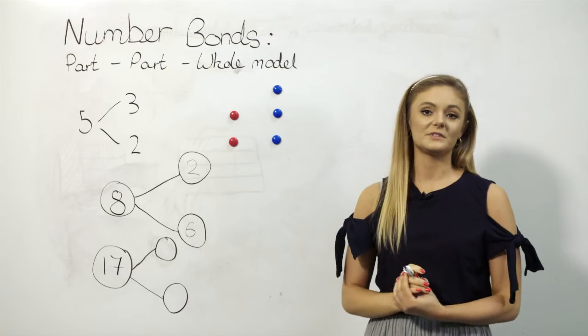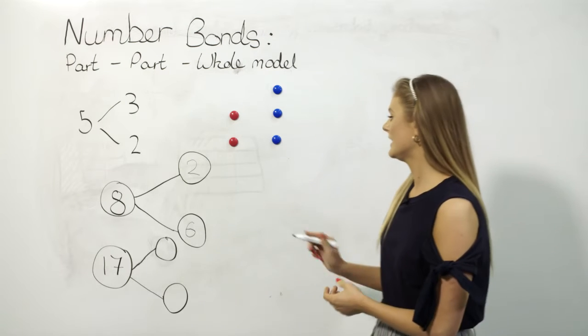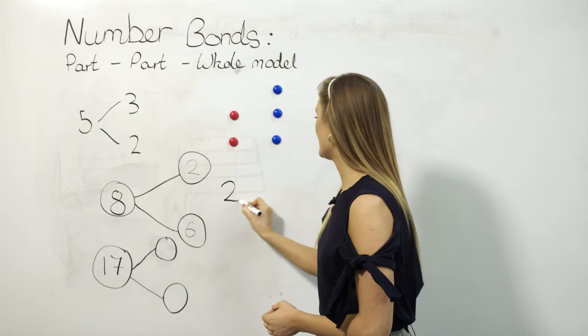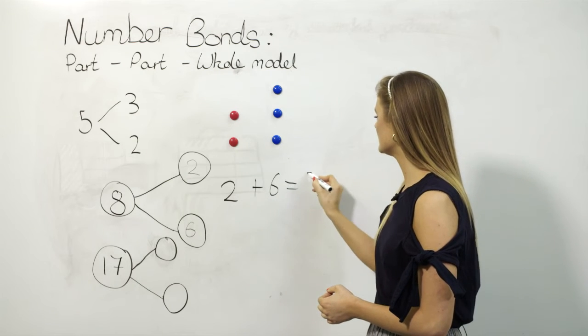Once the children are confident doing this using the part-part-whole model, we can represent the work in an abstract way with the calculation 2 + 6 = 8.